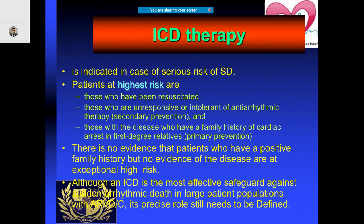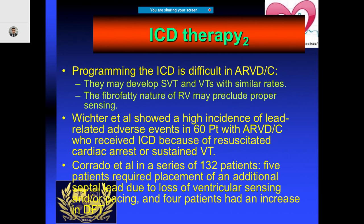ICD therapy should be reserved only for cases at serious risk for sudden cardiac death. Patients at highest risk are those who have been resuscitated, those unresponsive or intolerant of anti-arrhythmic therapy, and those with a family history of cardiac arrest in first-degree relatives as primary prevention. There is no evidence that patients with a positive family history but no evidence of disease are at exceptionally high risk. ICD programming may be difficult because patients can have SVT or VT, and the fibro-fatty nature of the RV may make it difficult to sense the right arrhythmia.